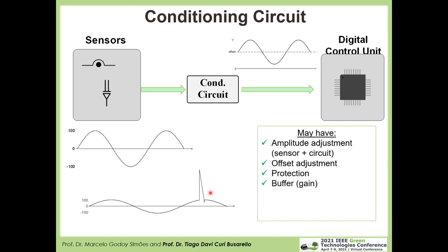Another thing to consider in our conditioning circuit is a buffer. Depending on the sensor and the input of the digital control unit, we need to handle voltage and current levels in a proper manner, and we use a buffer for this. We can also employ signalization — for example, turning on and off some LEDs to indicate an overvoltage or some other condition, so someone is aware that attention is required.